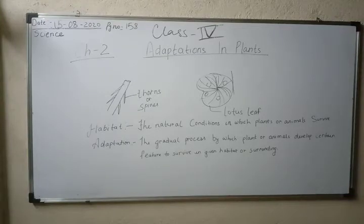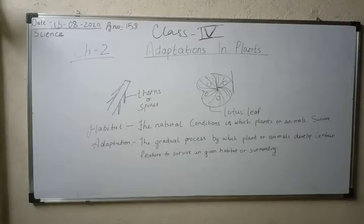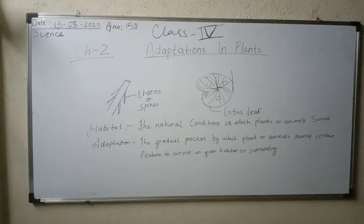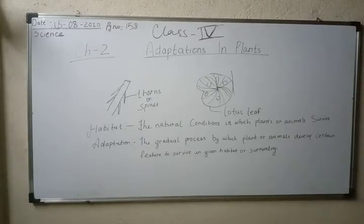Now, all students are requested to open your books and take out page number 158. You will see that the learning points in this chapter are habitat, adaptations, and types of terrestrial and aquatic plants.